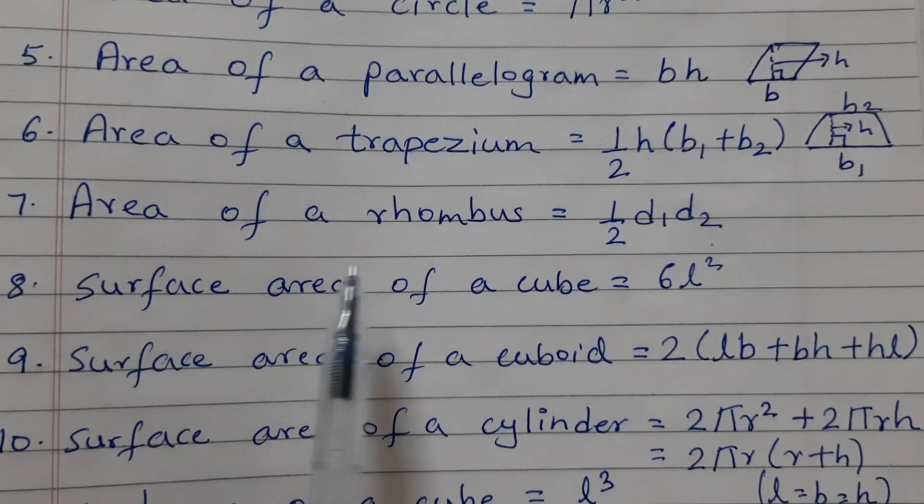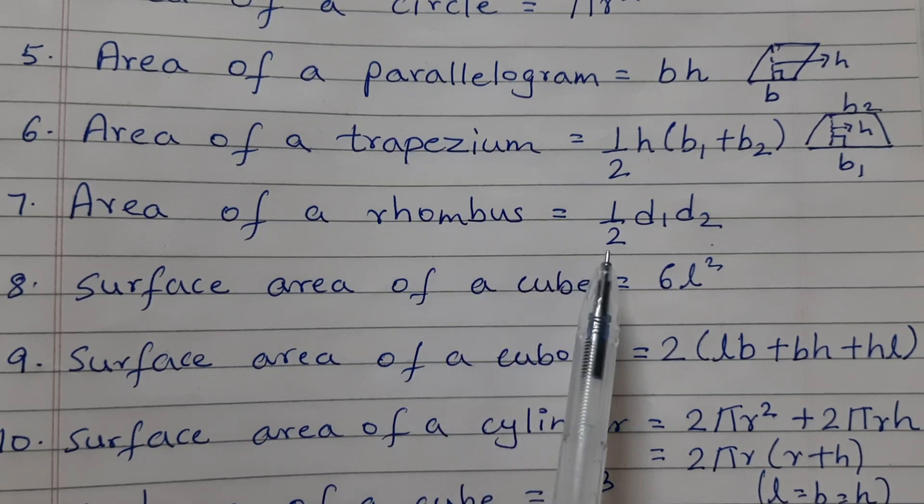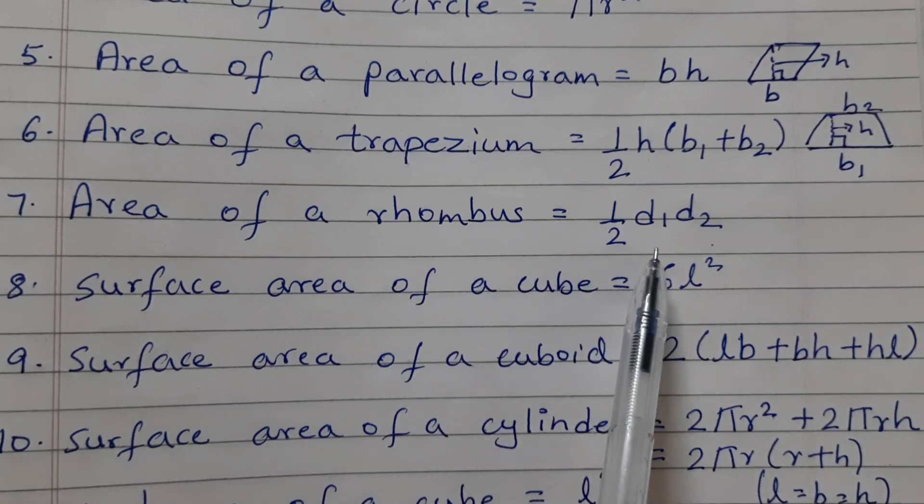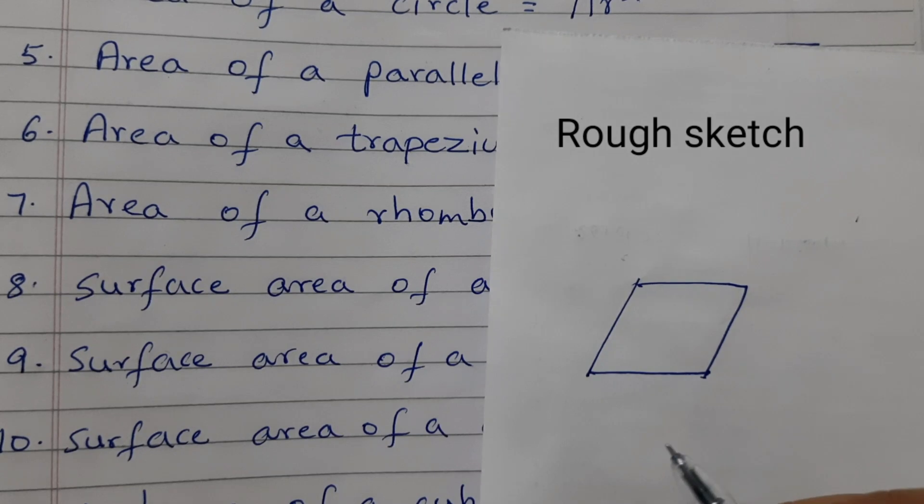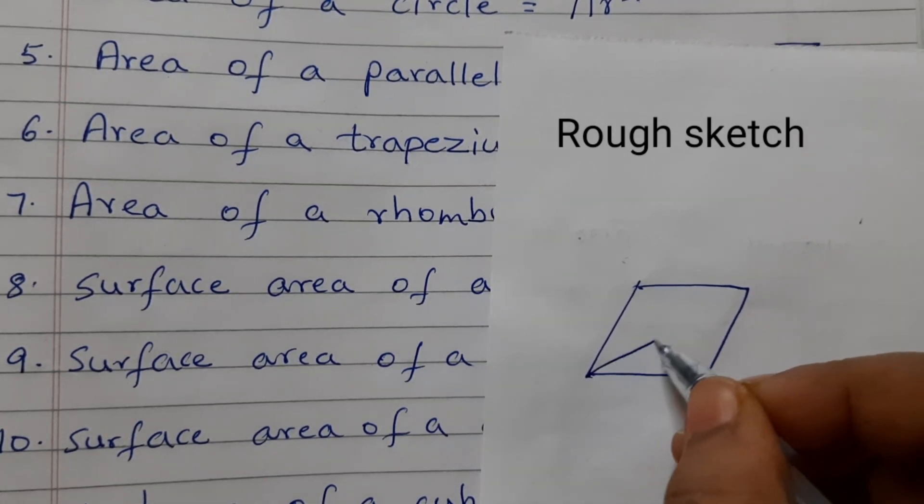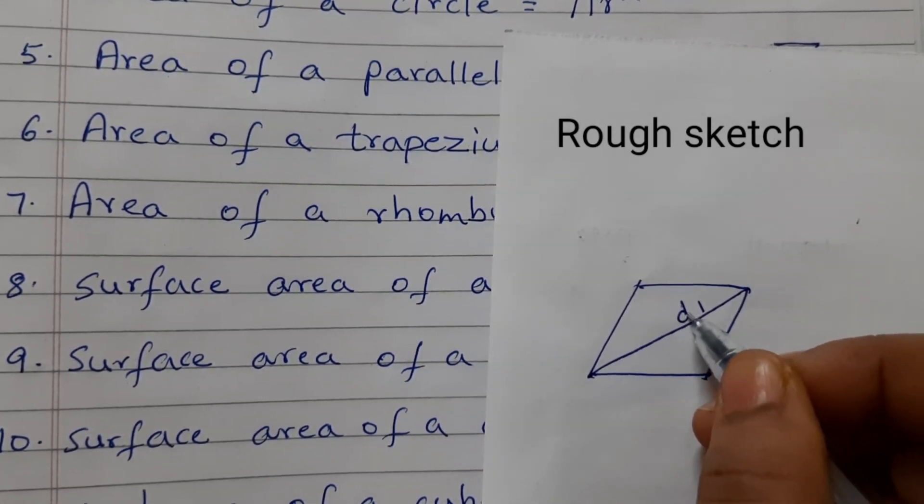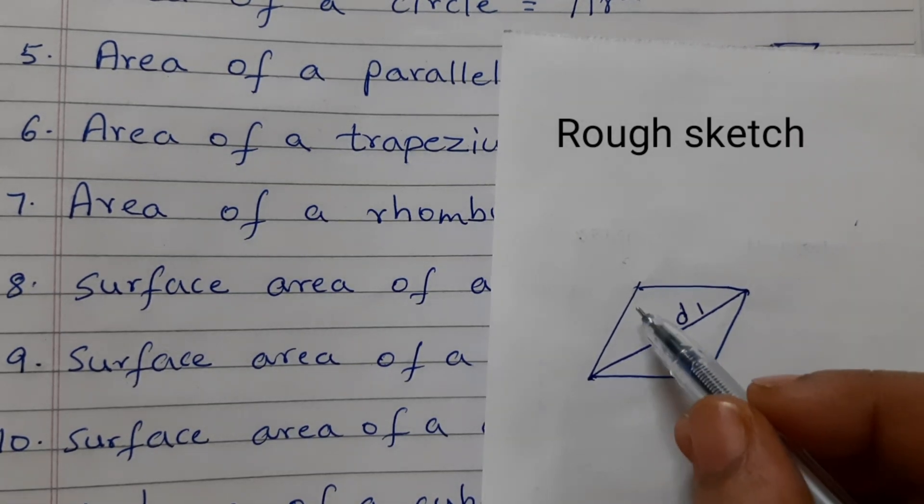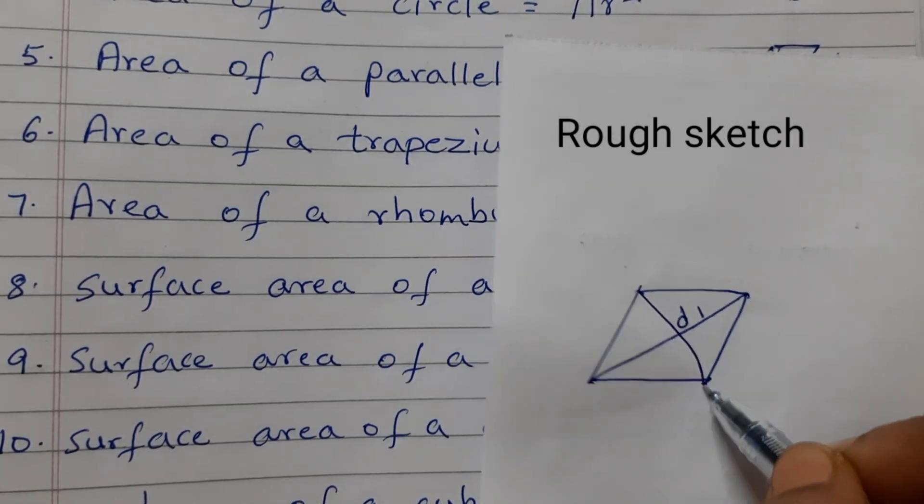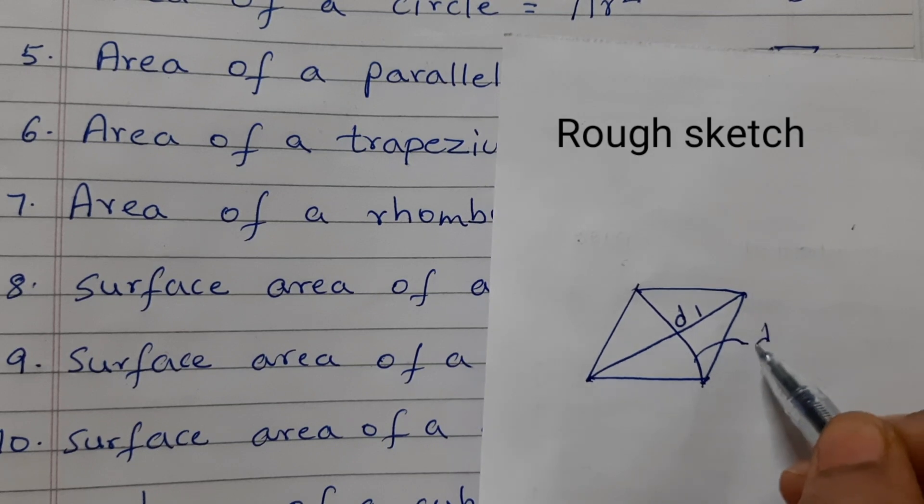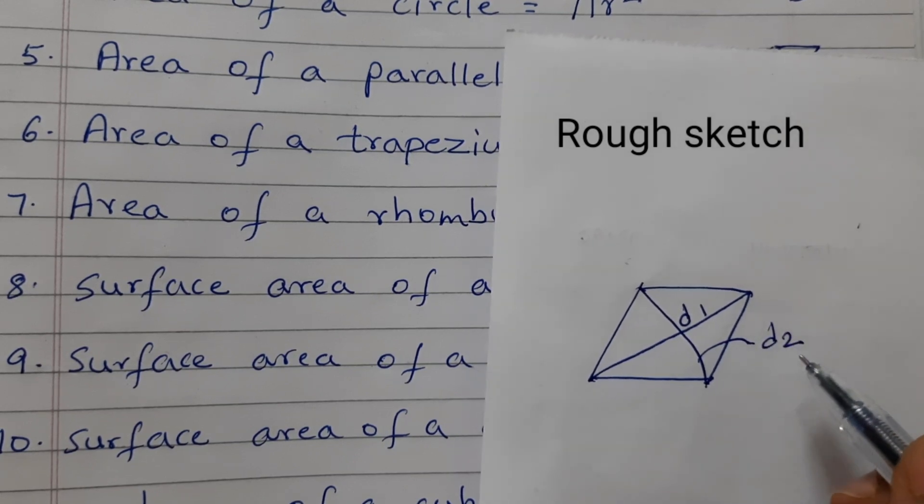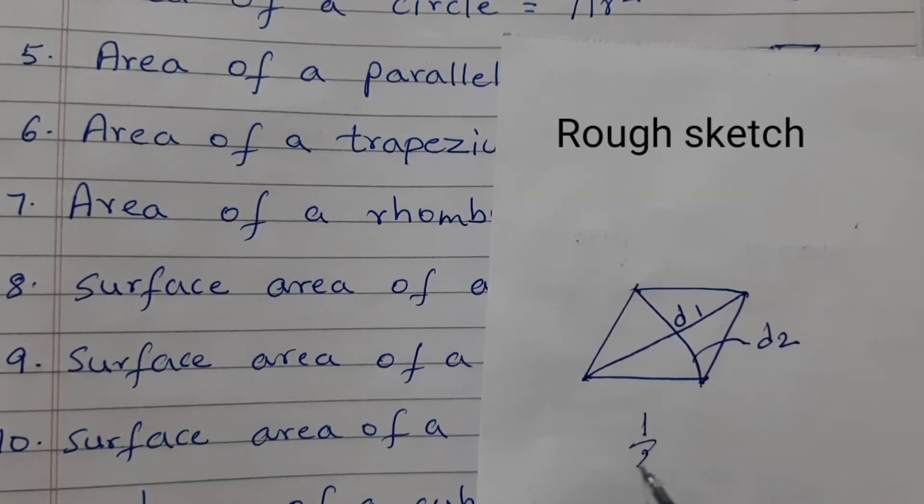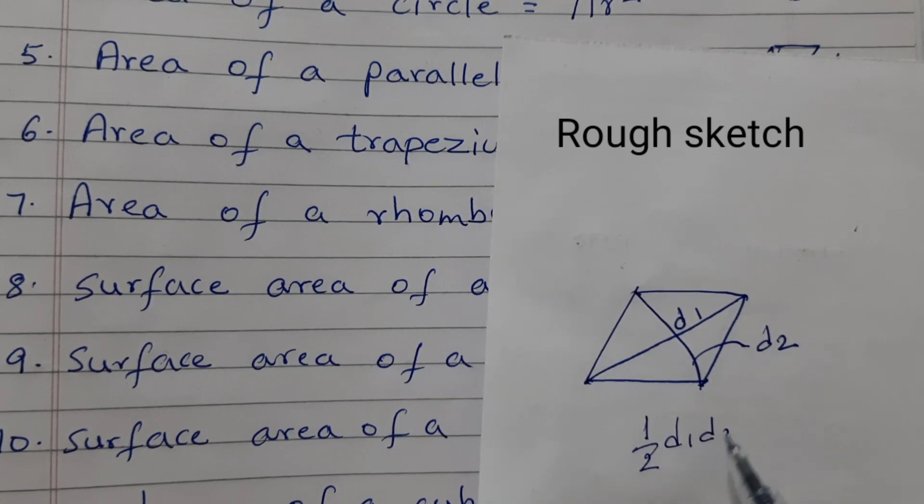Area of a rhombus is equal to half into D1 into D2. Suppose this is the rhombus, the diagonal 1 is D1 and diagonal 2, this is D2. So area is half D1 into D2.